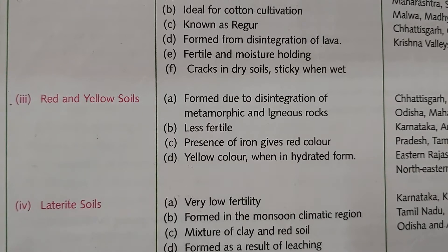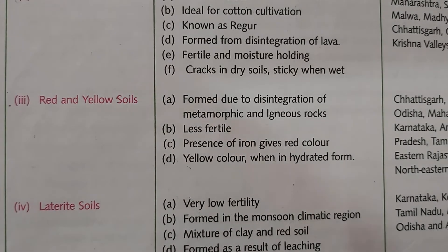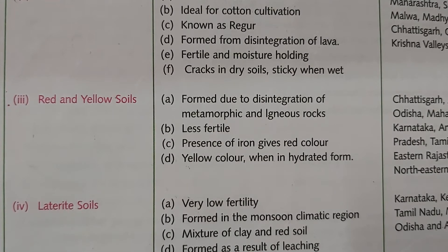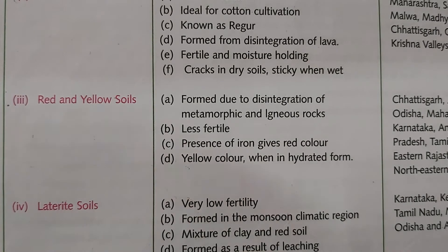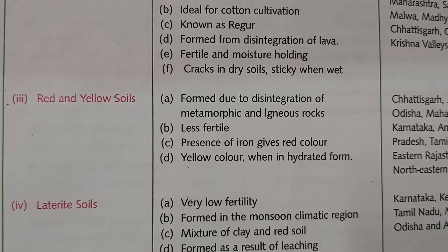One type forms beneath the earth and is called intrusive igneous rock. The other, formed at the surface, is called extrusive igneous rock. Metamorphic rocks are those whose physical properties have been changed due to high heat and pressure. Red and yellow soil is less fertile. The presence of iron gives it a red color.